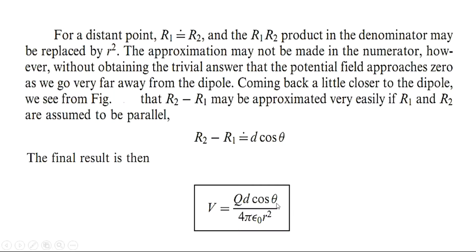Along the equatorial line (the y-axis), the potential is zero — but this does not mean the electric field is zero. The electric field exists there but the potential field is zero. So V = Qd·cos90° / (4πε₀R²) = 0, confirming that the y-plane is a plane of zero potential.